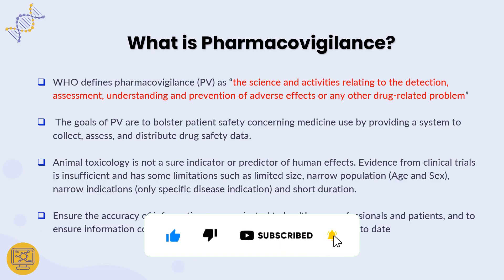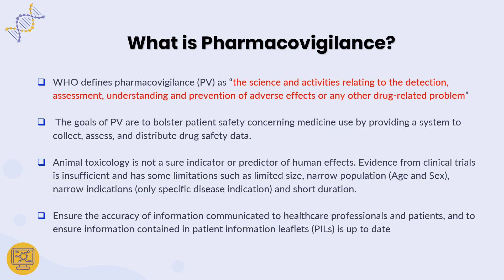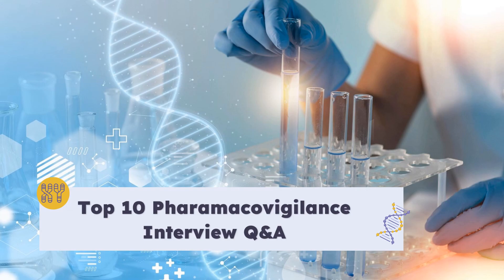Using the pharmacovigilance system, we ensure that accurate safety information is communicated to all stakeholders, healthcare professionals, and patients — clearly communicated in the form of a patient information leaflet that is kept up to date. When you purchase any medication, the leaflet contains the full safety profile of the drug, any interactions, allergies, or safety concerns you should know about. That data comes from the pharmacovigilance process. Now let us focus on the top 10 pharmacovigilance interview questions and answers.